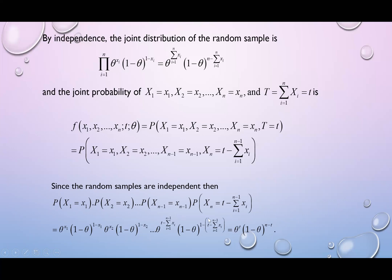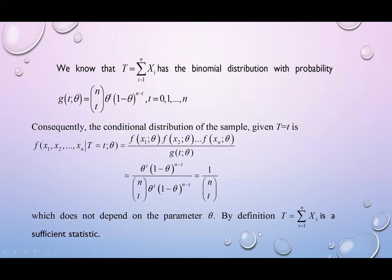So since T equals to sum xi has the binomial distribution, so we need to know what is the probability function for binomial distribution. So the probability function for binomial is given as n choose t, where t is sum xi, theta to the power t, 1 minus theta, n minus t, and your t take values from 0 up to n.